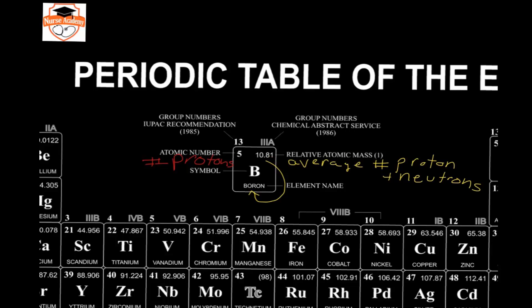As we look at our periodic table, we'll also have the atomic symbol and the name of the element. The atomic symbol, as you look at the periodic table, is always one capital letter followed by one lowercase letter.